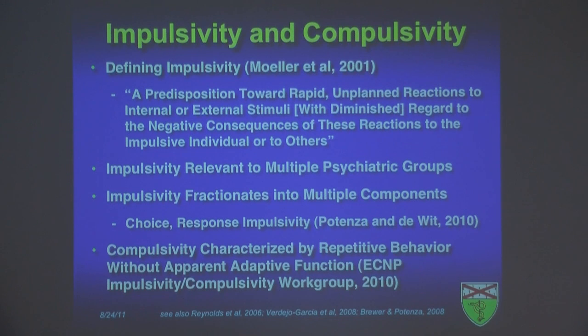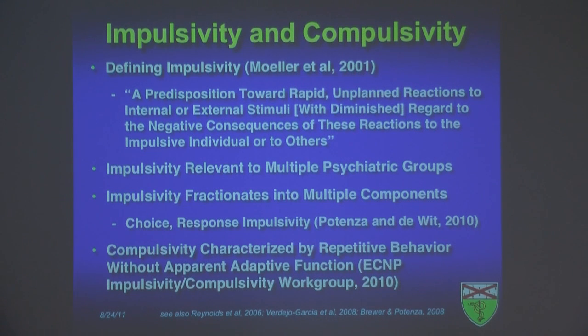Another area of interest is thinking about how during the addiction process, behavior might change from being arguably more impulsive to being more compulsive or habitual in nature. In the way that impulsivity has been defined and characterized over the past decade, we think that compulsivity as related to pathological gambling, addictions, and other psychiatric disorders will warrant similar attention.